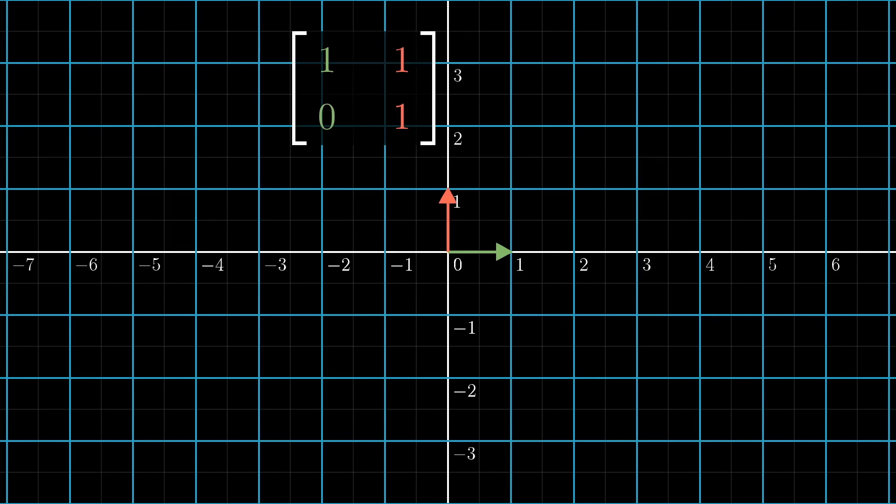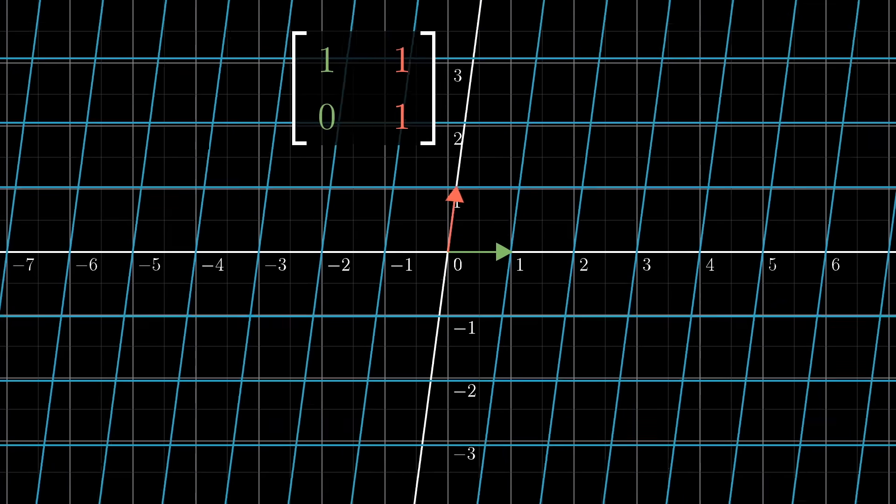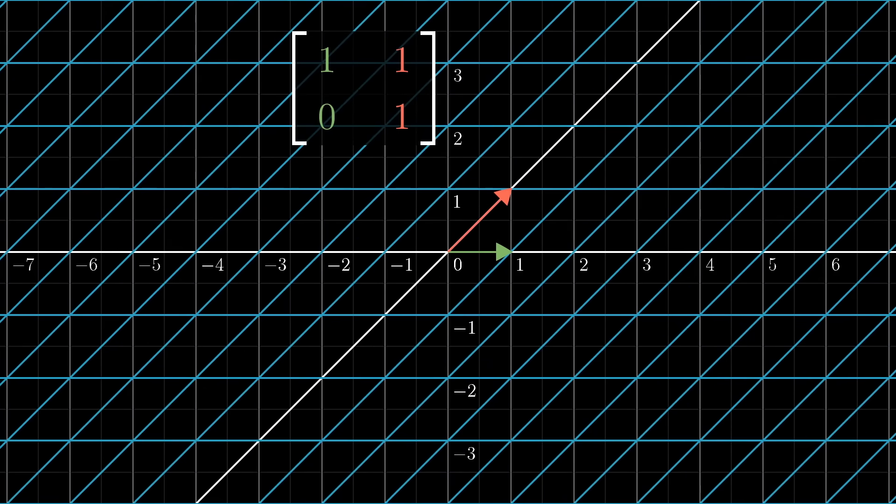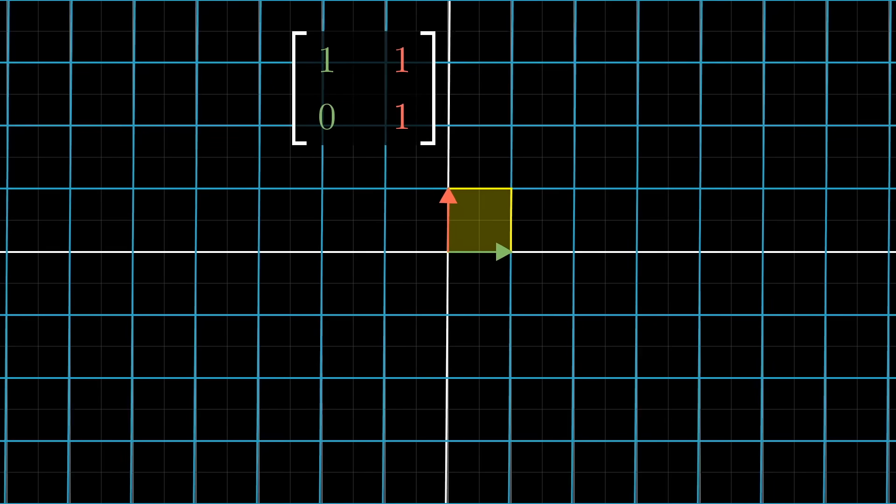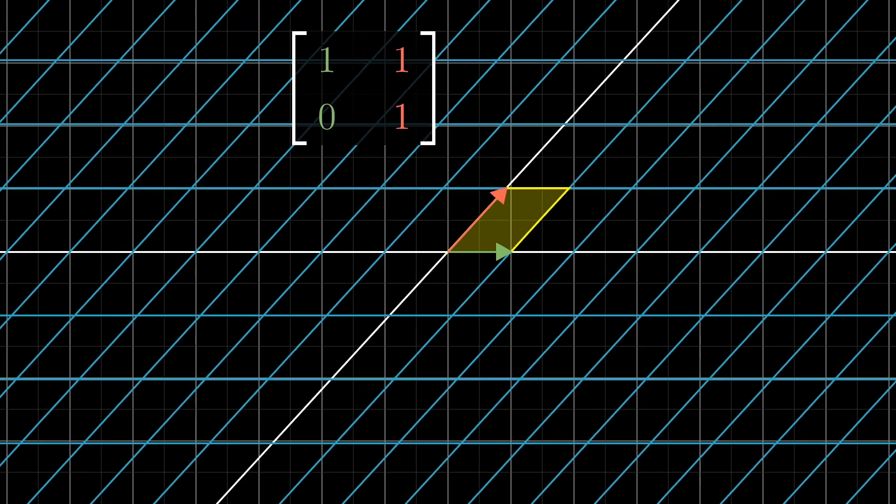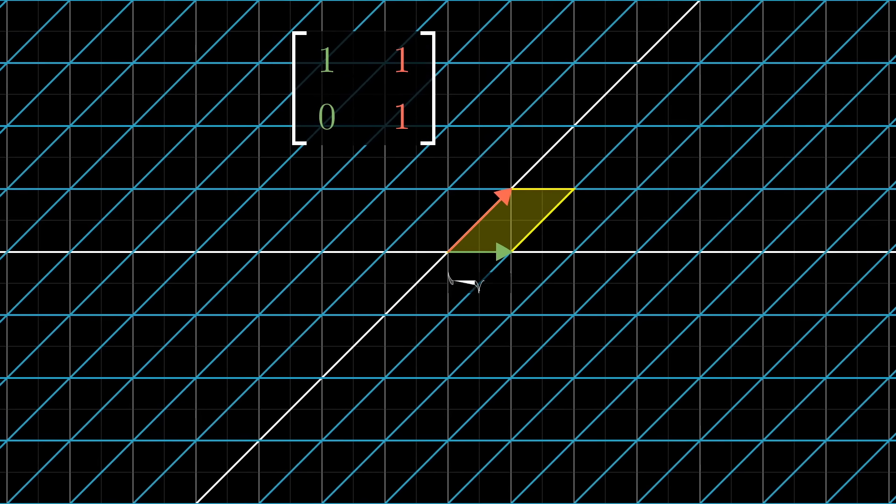Compare that to a shear, whose matrix has columns 1, 0 and 1, 1, meaning i-hat stays in place and j-hat moves over to 1, 1. That same unit square, determined by i-hat and j-hat, gets slanted and turned into a parallelogram. But the area of that parallelogram is still 1, since its base and height each continue to have length 1.